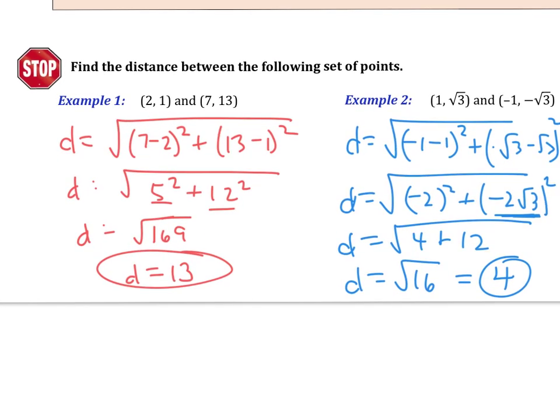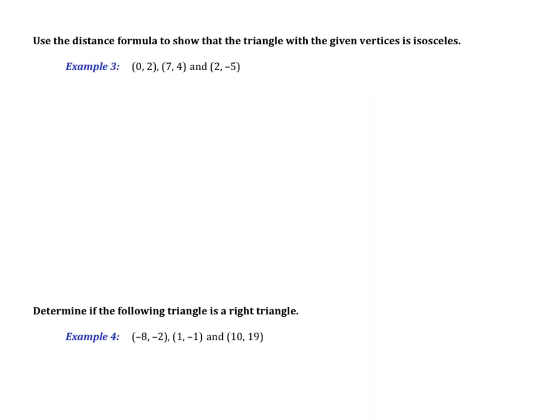Moving on — we're taking the distance formula and applying it to determining whether a triangle is isosceles. Recall that in an isosceles triangle, two sides have the same length. Our objective is to find the distance between each pair of the three points and see if at least two distances are equal. We'll need to apply the distance formula three times.